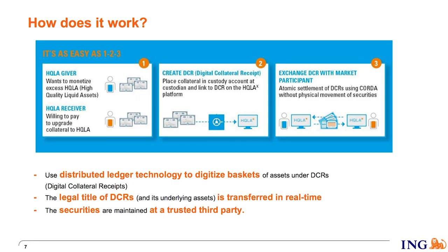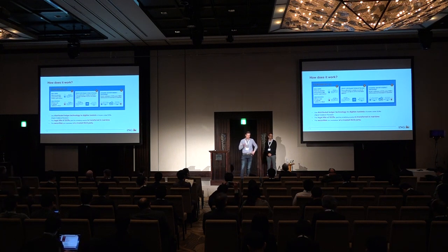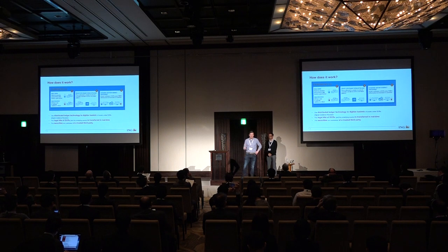So how does it work? It requires two parties: an HQLA giver and an HQLA receiver — one bank with a surplus of high-quality assets and one with a shortage. Both banks give their securities to a custodian, who creates digital collateral receipts stored on Corda and confirms the inventory. These DCRs can then be atomically swapped in a single Corda transaction — an atomic delivery-versus-delivery of an HQLA asset versus a non-HQLA asset.